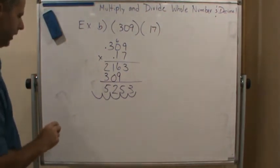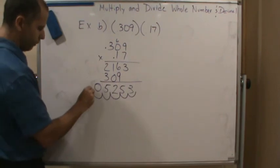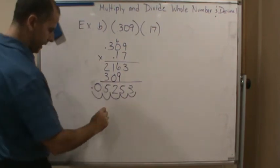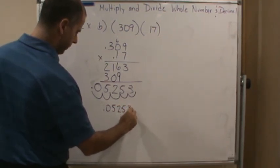So what do I do here? Well, I went one more. So guess what? I want to put a 0 there. And now I'm going to put my point. So my answer here is .05253.